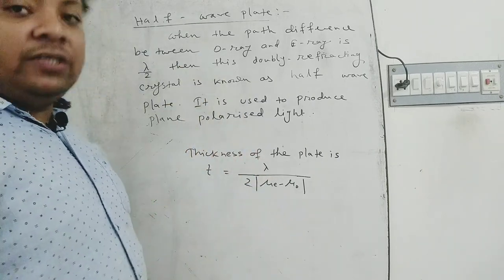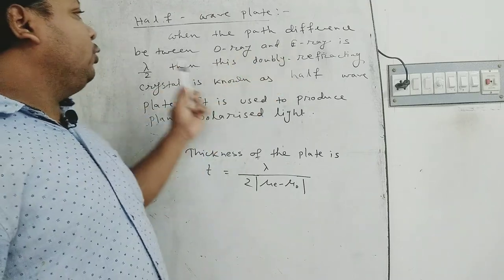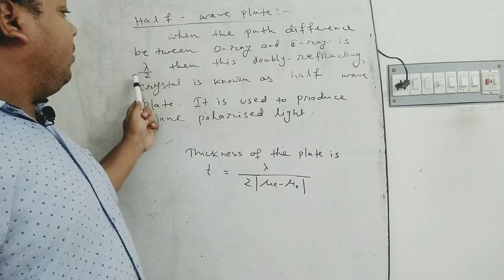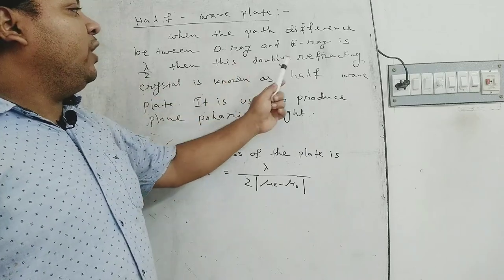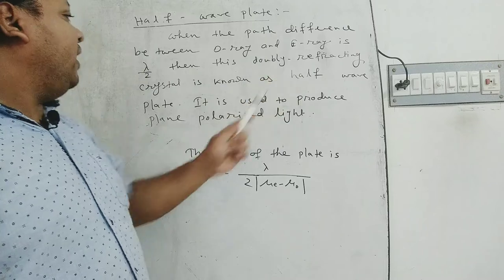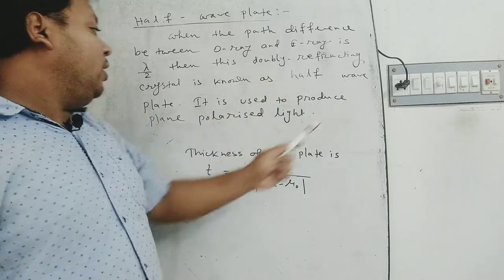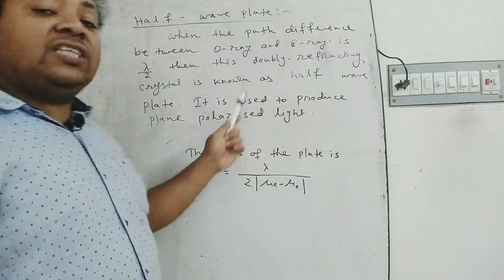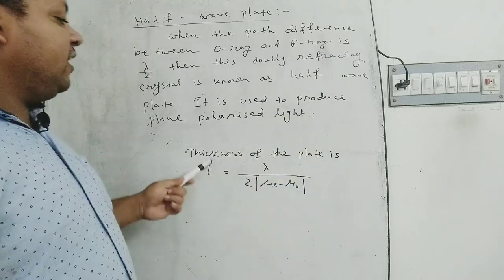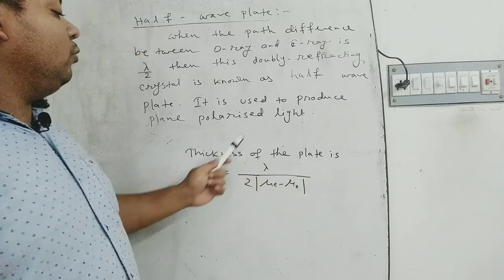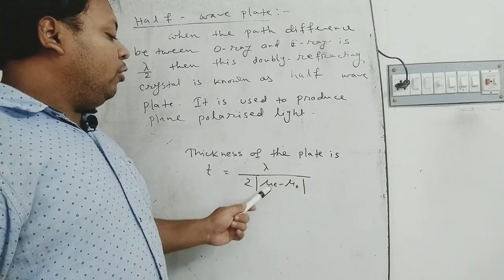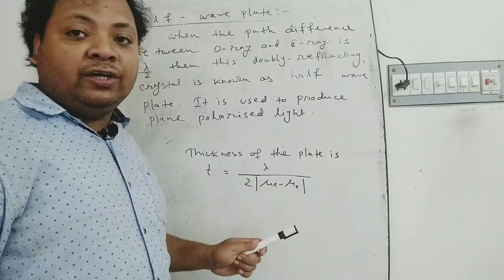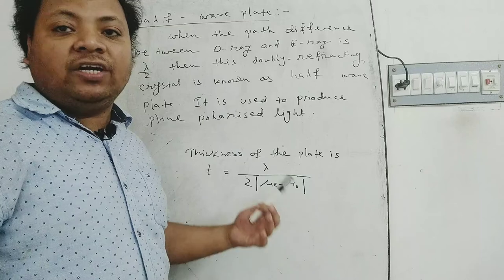Next, half wave plate. When the path difference between the ordinary ray and extraordinary ray is λ/2, then this doubly refracting crystal is known as a half wave plate. It is used to produce plane polarized light. In this case, the thickness of the plate is t = λ / [2|μₑ − μ₀|], that is, divided by twice the absolute difference of the refractive indices of the ordinary and extraordinary rays.